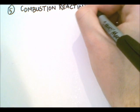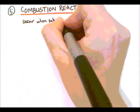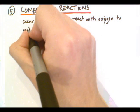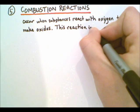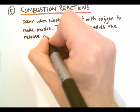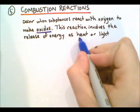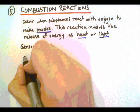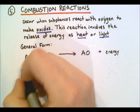Our fifth type of reaction is the combustion reaction. We always think about combustion as burning things, sometimes explosions. In terms of chemical reactions, combustion involves substances reacting with oxygen — it's really an oxidization reaction that involves the release of energy, either heat or light or both. Think about a fire: oxygen reacts with wood, we get heat and light, and products like carbon dioxide and water vapor. The general form is substance A reacts with oxygen to produce oxide AO, and some energy is released.